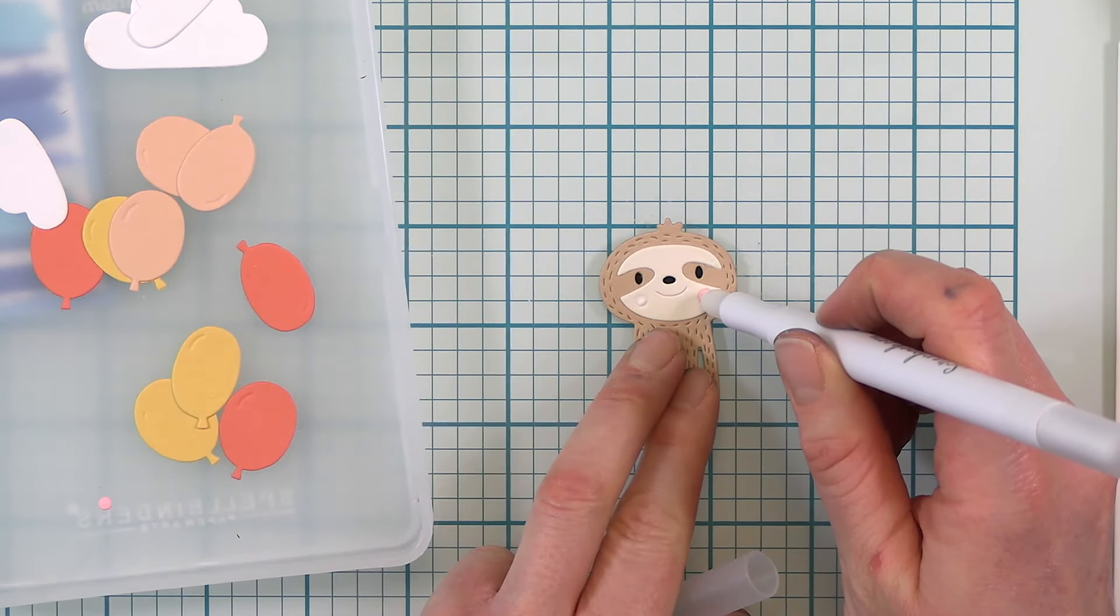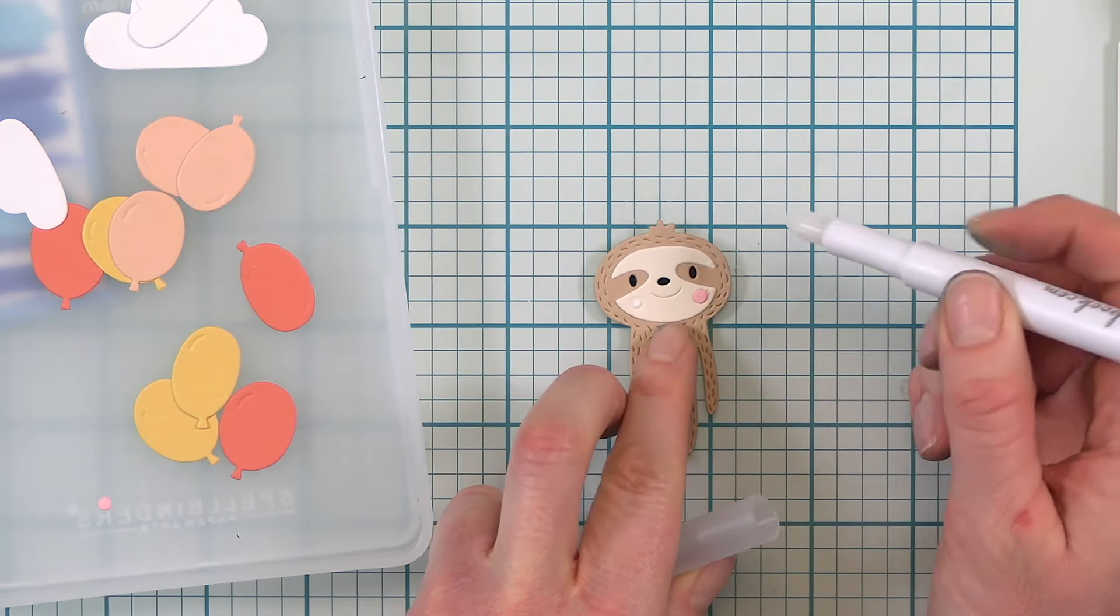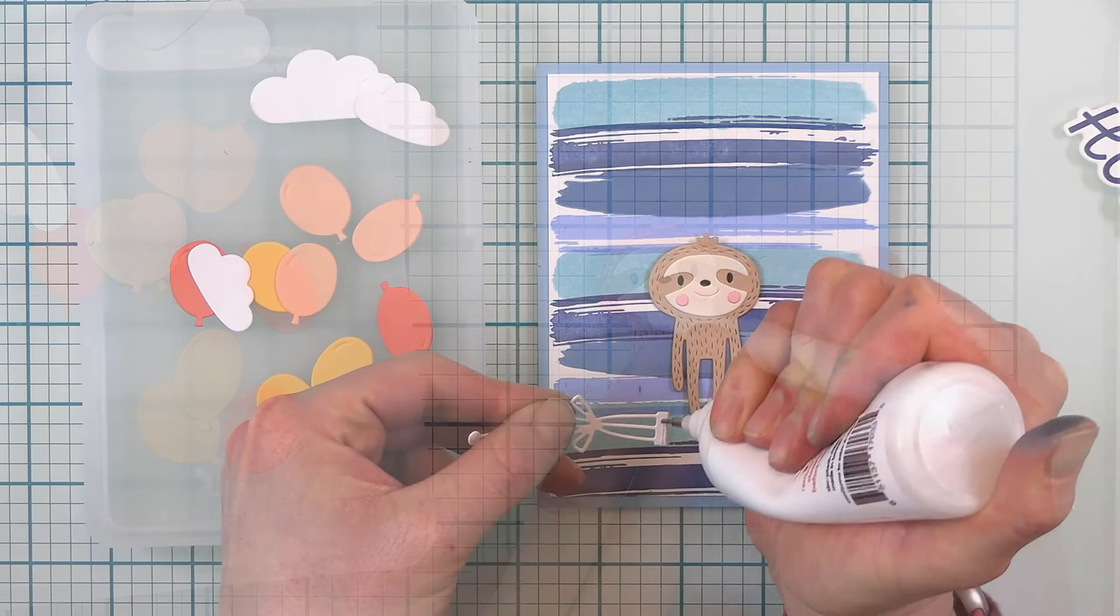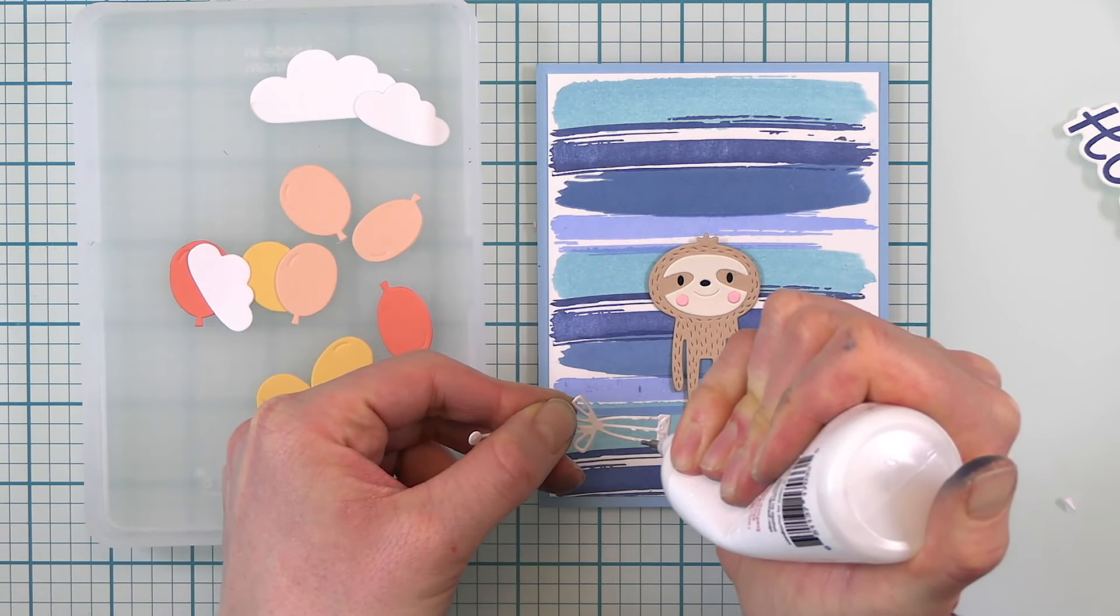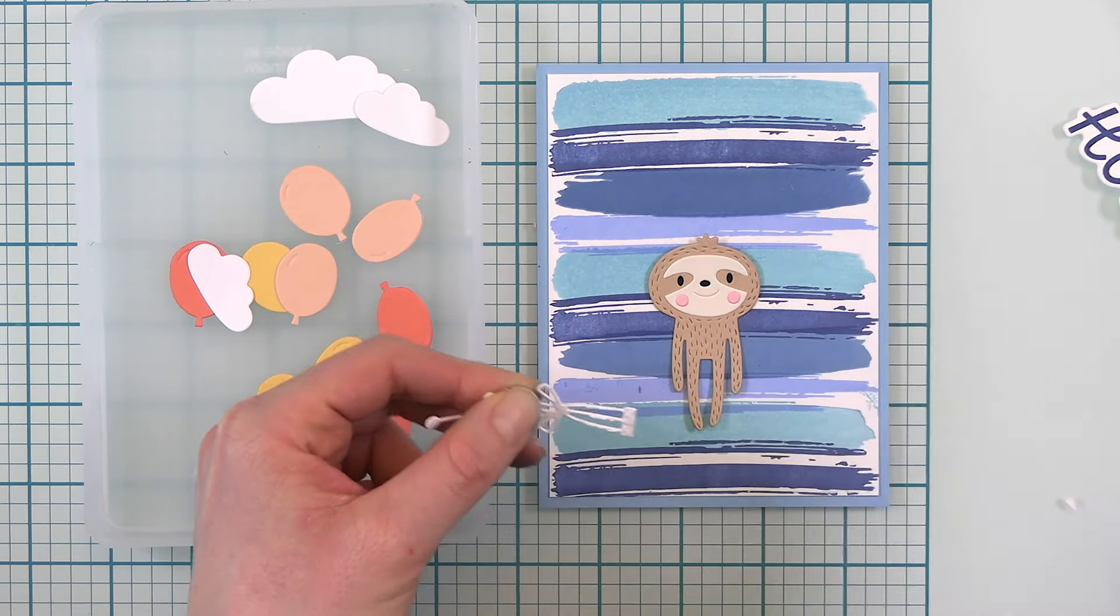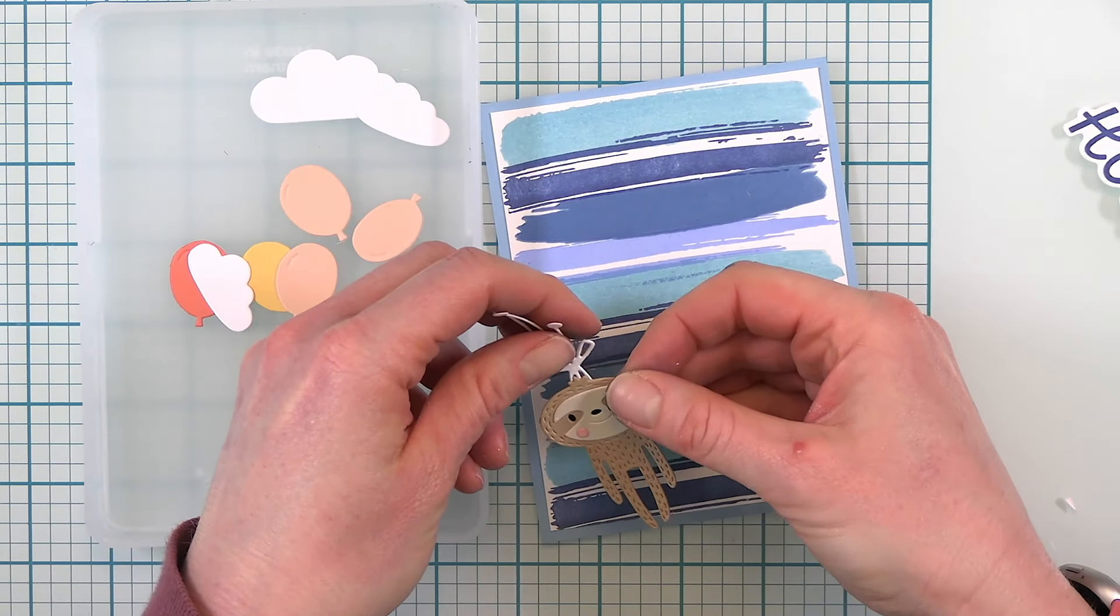Spellbinders makes this part so simple. Next I'm putting on his cute little pink cheeks and then I'm going to attach the balloon strings just behind his head.